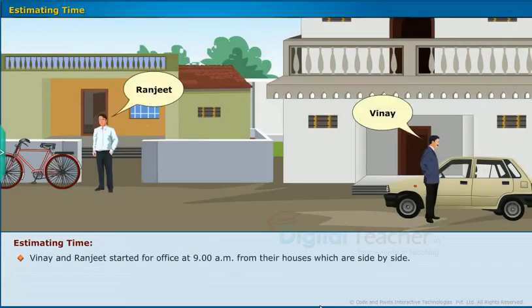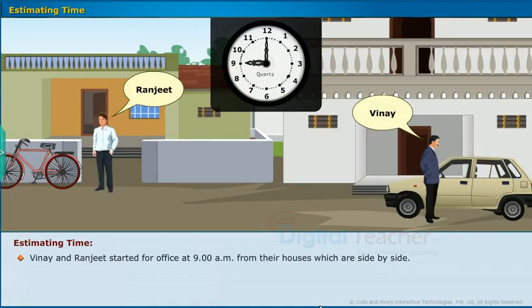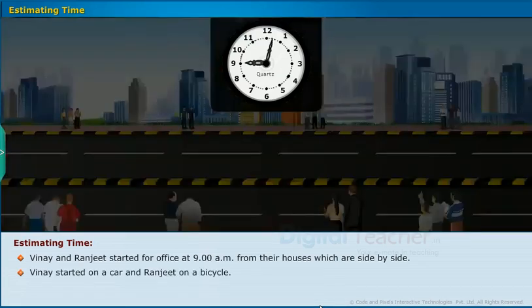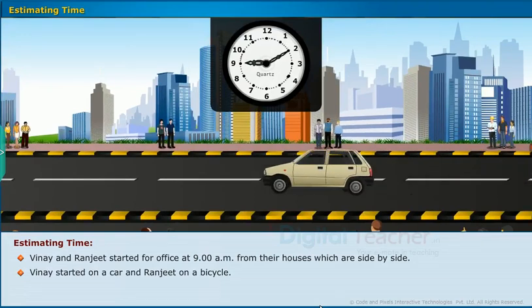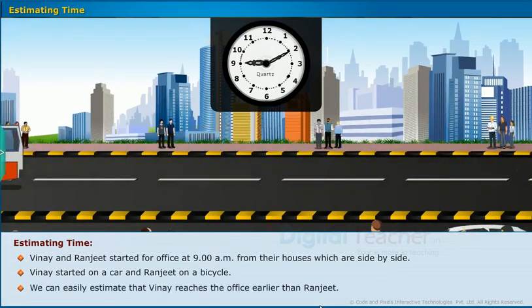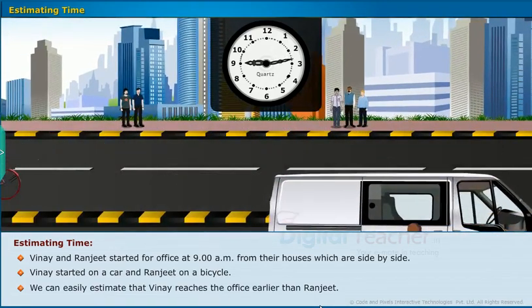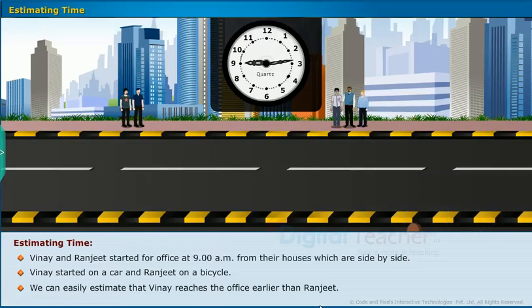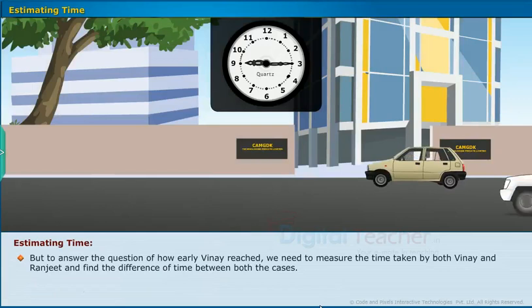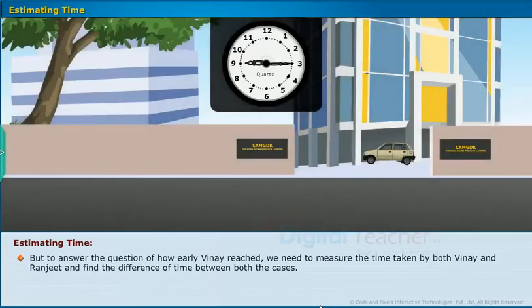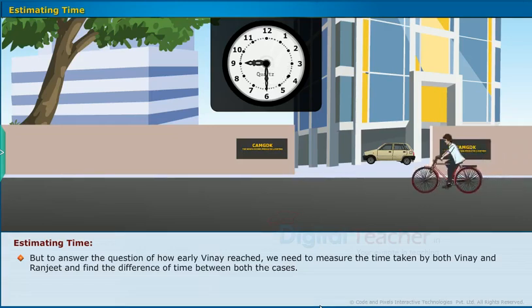Let us know how do we measure or estimate time. Vinay and Ranjit started for office at 9 a.m. from their houses which are side by side. Vinay started on a car and Ranjit on a bicycle. We can easily estimate that Vinay reaches the office earlier than Ranjit. But to answer the question of how early Vinay reached, we need to measure the time taken by both Vinay and Ranjit and find the difference of time between both the cases.